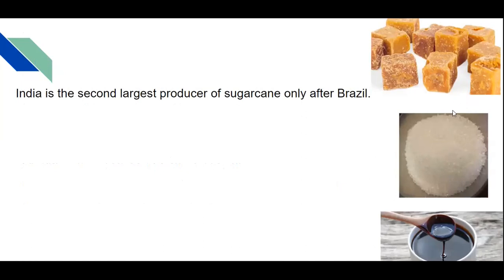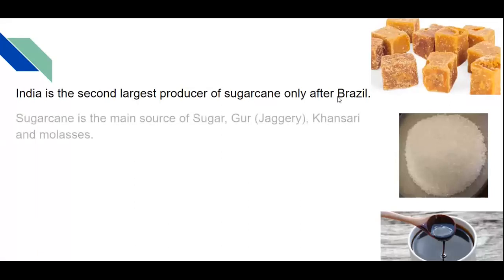Sugarcane is used to produce sugar, jaggery — also known as gur — khandsari, and molasses. These are the images: the first one is jaggery, the second is khandsari, and the third is molasses.